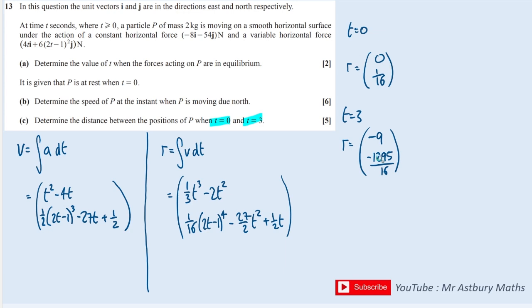So now I just need to work out the difference in the components. The i's have changed by 9, and the j's have changed by 1296 sixteenths. That's the change in the i's, that's the change in the j's. To work out the magnitude, I will need to square root the squares of these. That will give me the distance between the two positions. And when I put that into my calculator, I get 81.5, and that is in meters.